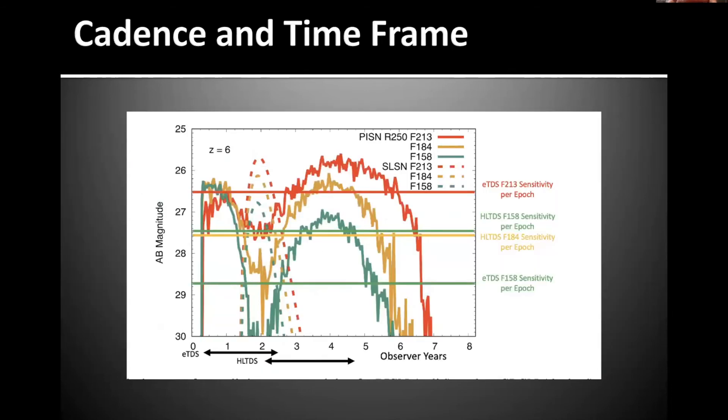Speaking of light curve, that is important to point out as well. Takashi showed this figure that shows the pair instability supernova light curve, which are the solid lines for various filters, does extend for a long time, especially when you take into account time dilation, like five, six, seven years. So to cover an entire light curve of one of these events, you have to go deep. That's first of all.